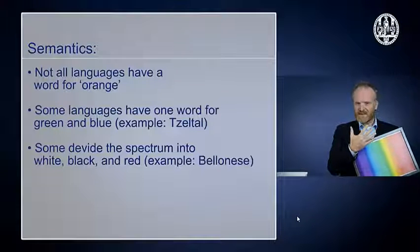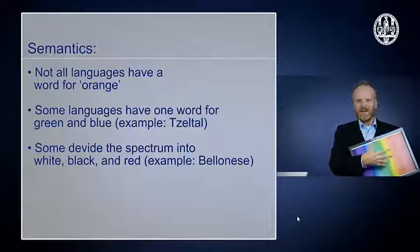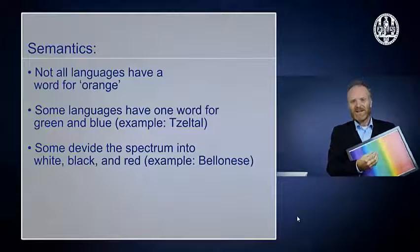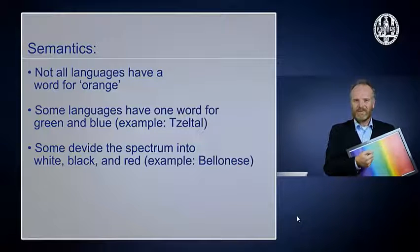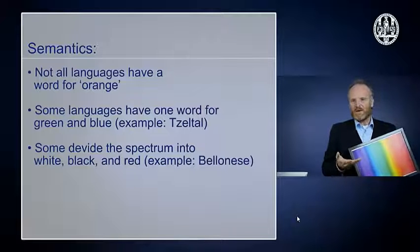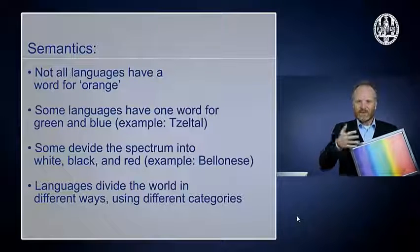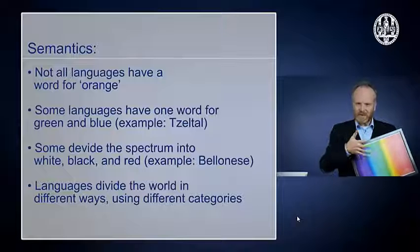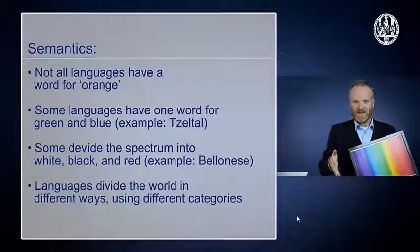Now, interestingly, those languages can differ a little bit. I already said some languages would think that green is a kind of black, but in other languages green is actually a kind of red. What's true for color is probably also true for everything else in the world — languages divide the world in different ways using different categories, and those categories are not necessarily extremely precise.